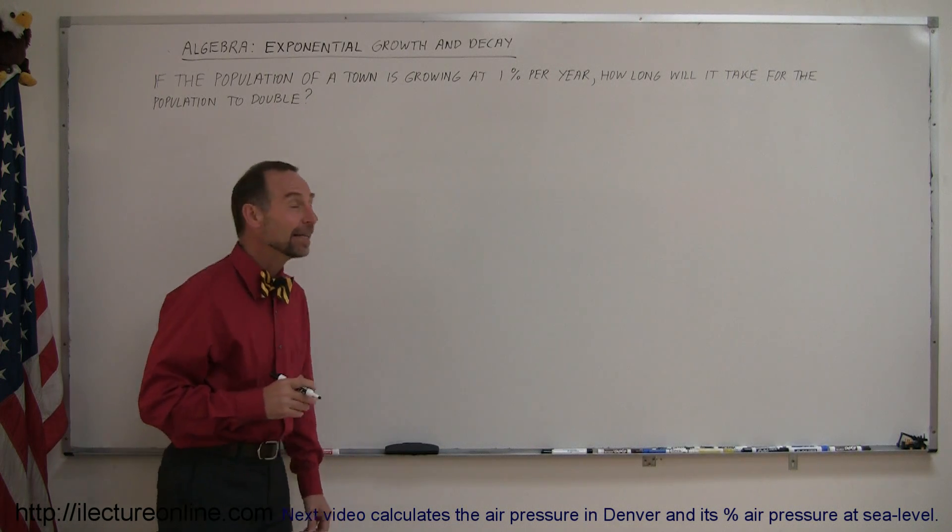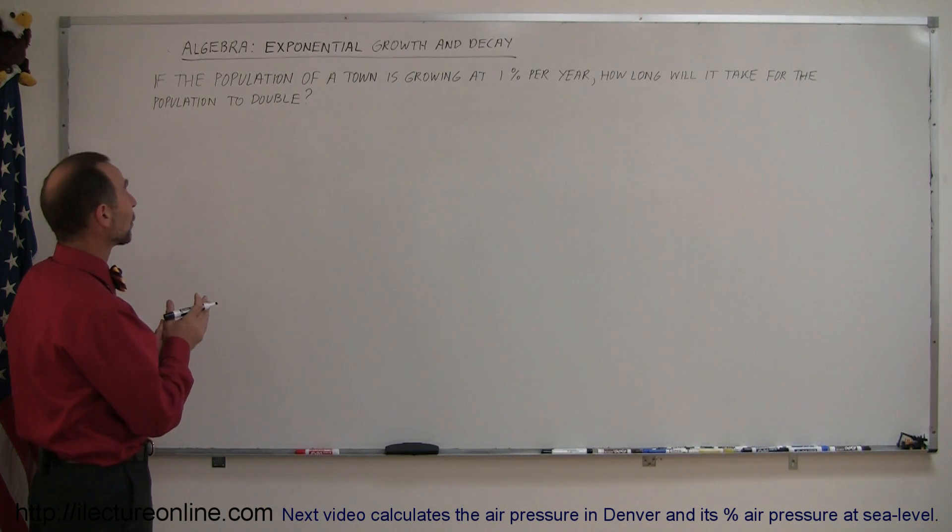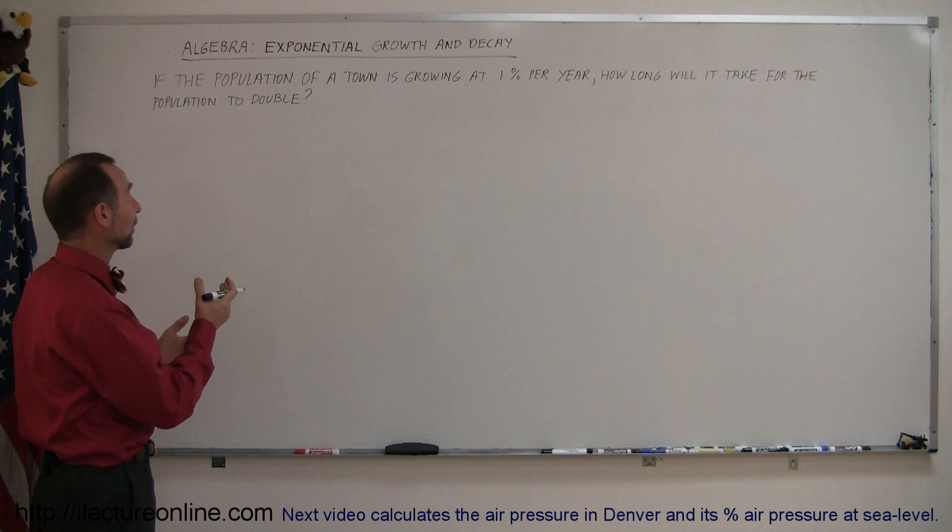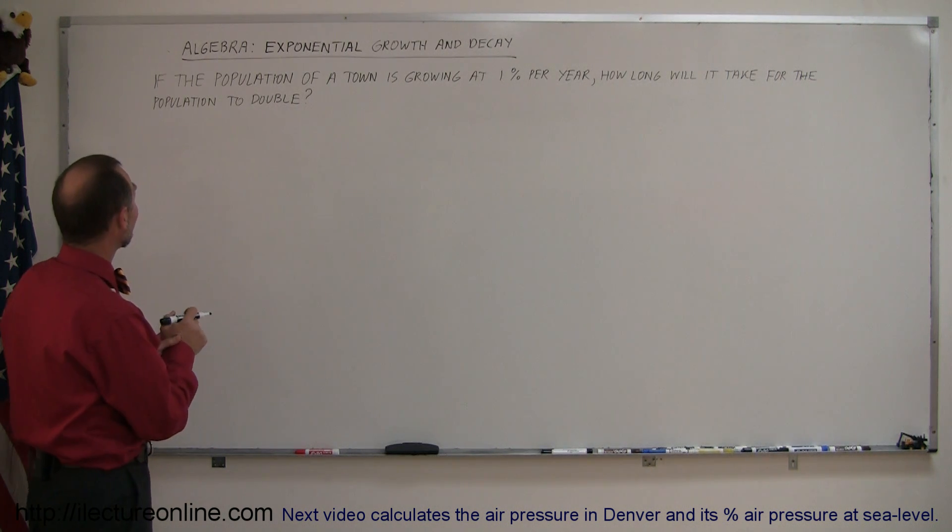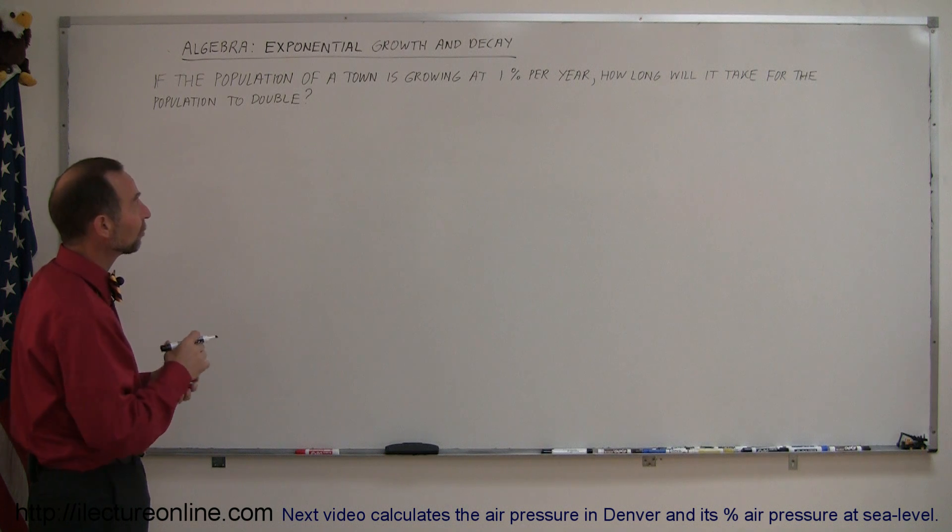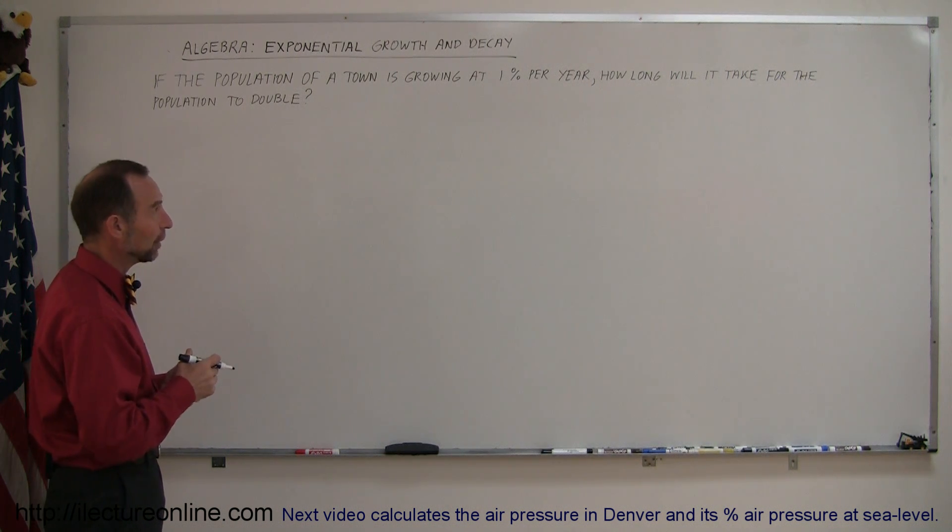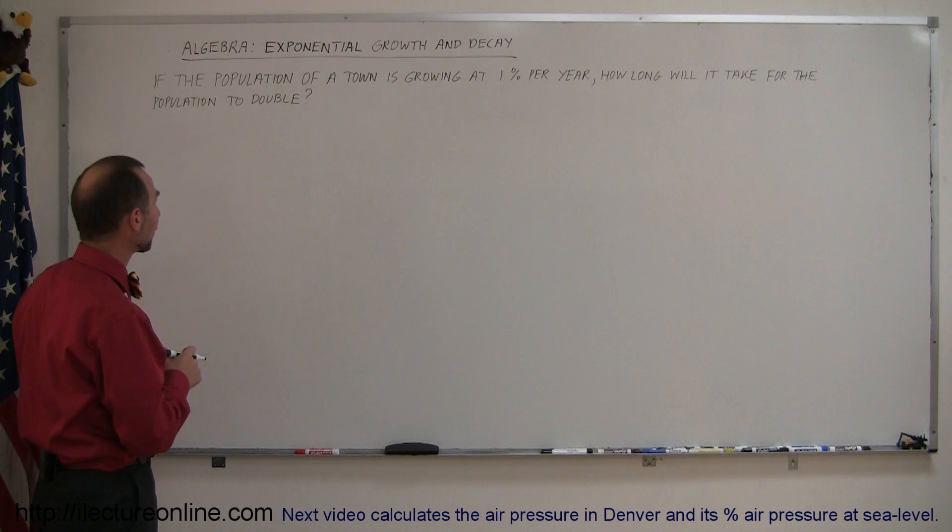Welcome to iLecture Online, and here's the third example of how we work problems with exponential growth and decay. Our example here says, if the population of a town is growing at 1% per year, how long will it take for the population to double?